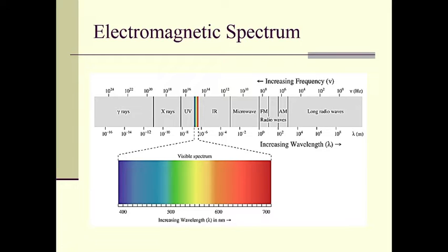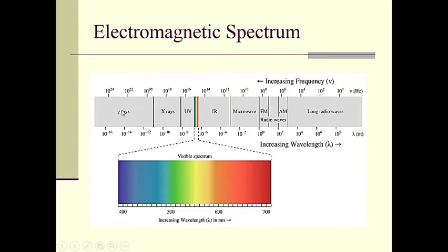This is the electromagnetic spectrum in which the various electromagnetic waves are placed according to their frequency or wavelength. Going from left to right, we can see the increase in wavelength of the electromagnetic waves, whereas the frequency decreases going from right to left. The gamma rays have the smallest wavelength and the highest frequency radiation, and therefore their energy is highest among all electromagnetic waves.